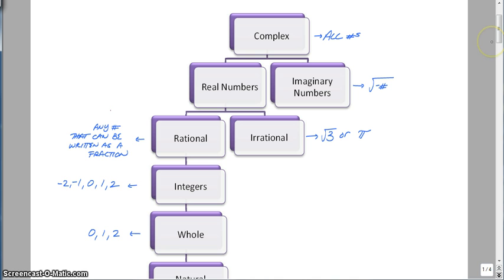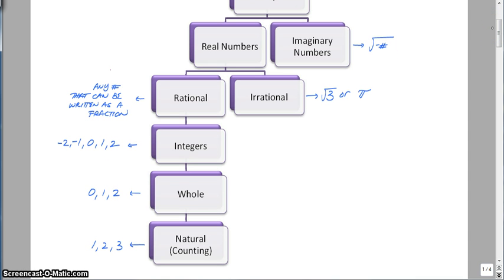So we're going to start with sets of numbers. Complex numbers basically include every single number that you can think of, but from there it breaks off to either real numbers or imaginary numbers. Every number that you can think of is going to be real except imaginary numbers. Imaginary numbers is like taking the square root of a negative number, which you have been told is not possible. Then real numbers will break off to either rational or irrational numbers. A rational number is any number that can be written as a fraction. But irrational numbers cannot be written as a fraction. Examples would be like the square root of 3 or pi. Then we have integers, whole numbers, and natural counting numbers. Natural counting numbers would be like 1, 2, 3, 4, 5. All positive, no zero. Whole numbers would be your natural numbers plus zero. Zero is included in the whole number group.